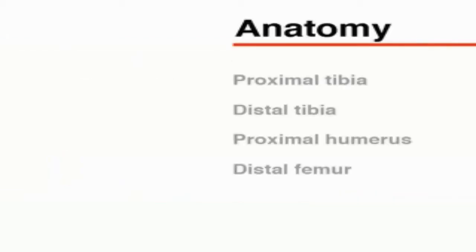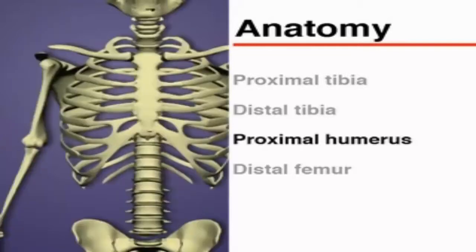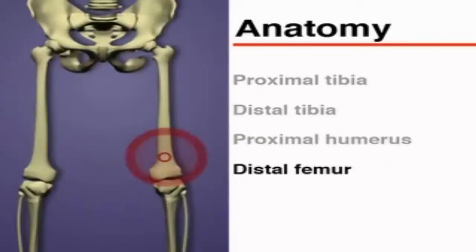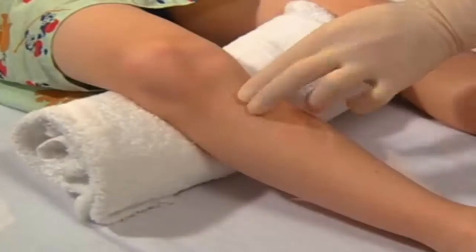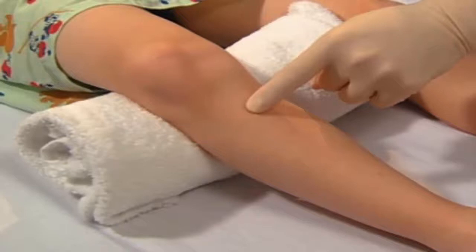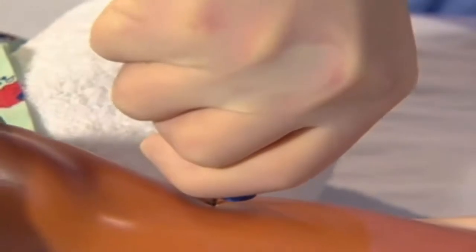Several anatomic sites may be used for intraosseous cannulation. The most commonly used include the proximal tibia, the distal tibia, the proximal humerus, and the distal femur. The anterior iliac spine is used less commonly. The sternum and distal radius have been identified for use in adults, but not children. We will review anatomic landmarks at the most commonly used sites before demonstrating preparation and cannula insertion.